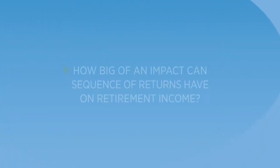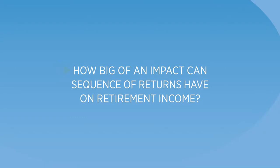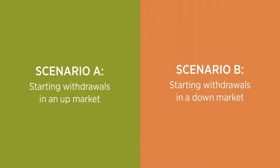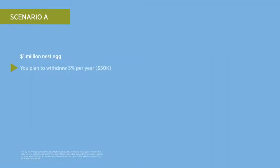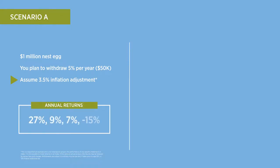How big of an impact can sequence of returns have on retirement income? Let's demonstrate the potential effect sequence of returns can have on your retirement income by comparing two hypothetical scenarios. Starting with a $1 million nest egg, you plan to withdraw 5% per year — $50,000 — assuming a 3.5% annual adjustment for inflation. In Scenario A, we'll use this sequence of annual returns and repeat this sequence until your retirement income is depleted.